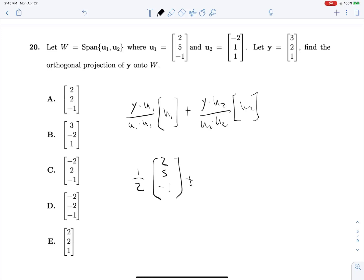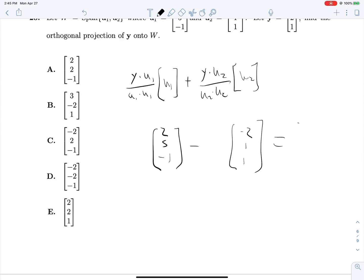We get 1 half multiplied by U1, which is 2, 5, negative 1, and then we're adding Y dot U2, which is negative 6 plus 3, so negative 3, divided by U2 dot U2, which is 6. This becomes negative 1 half multiplied by U2, negative 2, 1, 1. Let's multiply both by 2 to make the computation easier, as long as we remember to divide by 2 in the end. We get 4, 4, and negative 2. Dividing by 2 gives us 2, 2, negative 1, which is our answer.